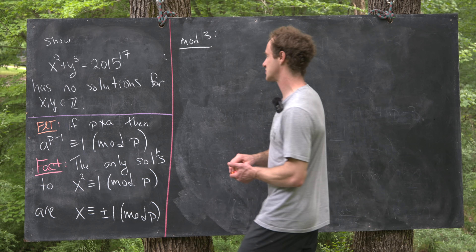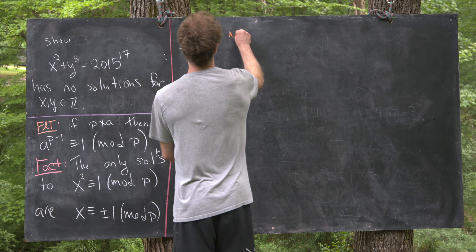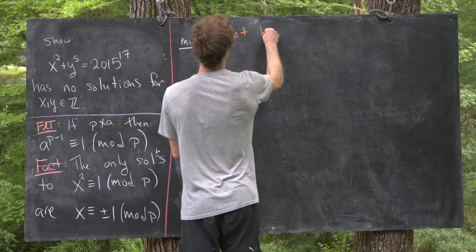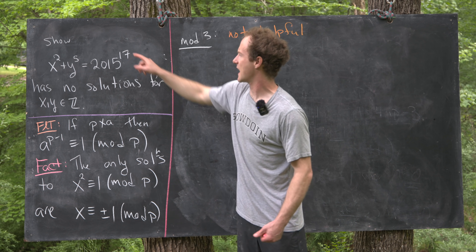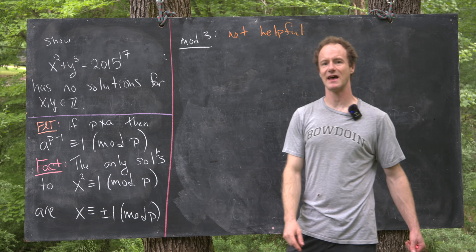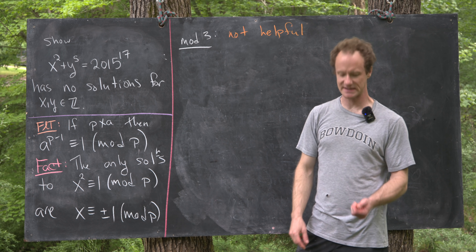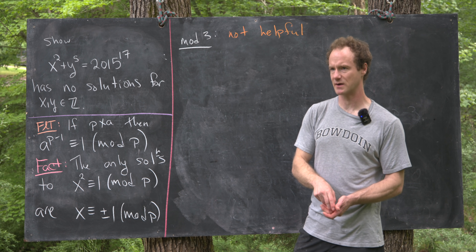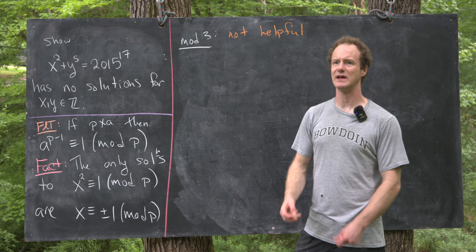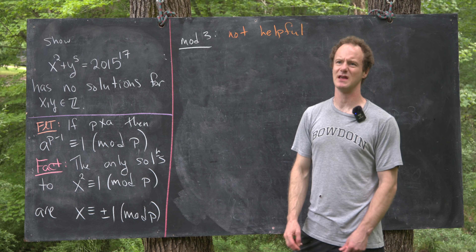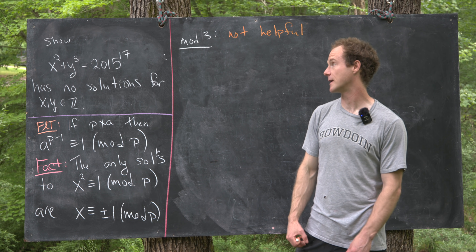But working mod 3 is not super helpful here. So next we would maybe look at the exponent 17, but 17 is 1 less than 18, and that's not a prime, nor can we do anything to make it act close to being a prime.